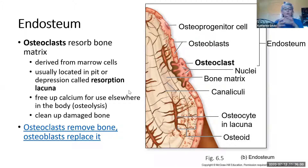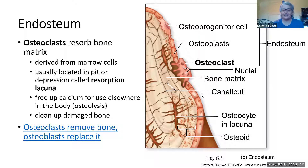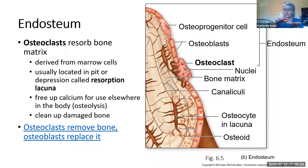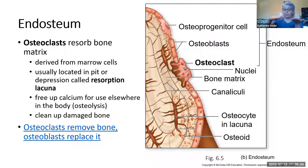Osteoclasts are the ones that reabsorb the bone matrix — the calcium phosphate. These actually come from bone marrow, but then they sit in this endosteum layer. They go along and secrete enzymes that dissolve the mineralized part of the bone. They sit in these little pockets called resorption lacunae because they're resorbing the bone tissue.